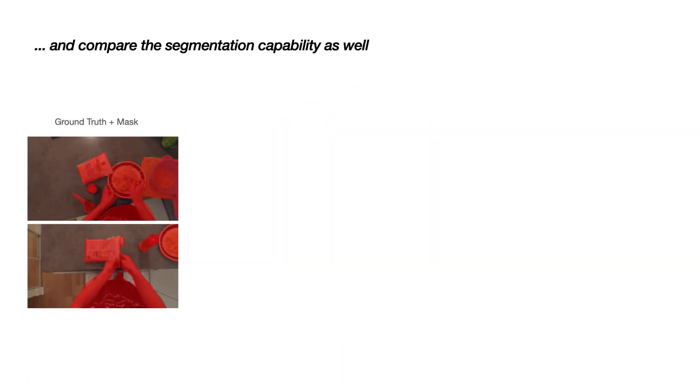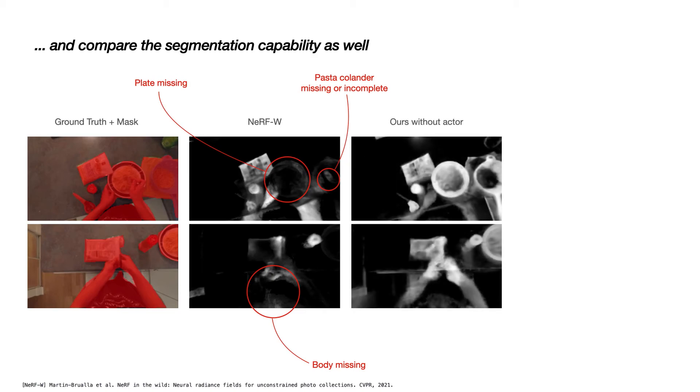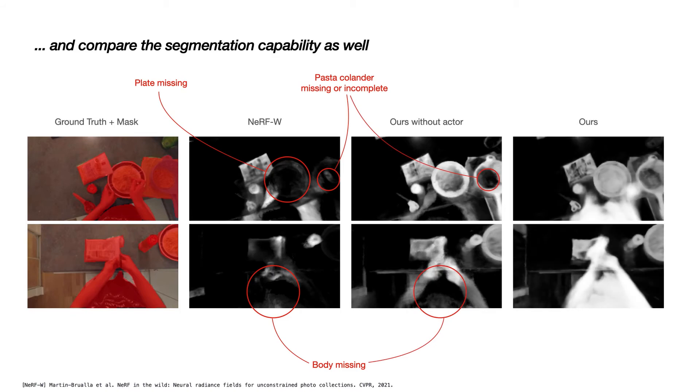Now we also compare our method to NeRF-W in terms of the segmentation performance. Here we see test views with ground truth annotations overlaid in red color. We note that NeRF-W fails to capture the plate and the actor completely. It also captures finer details, such as the scissors or the package less reliably. If we employ our method without the actor, we notice that the entire lower body is missing, whereas the hands are segmented with low confidence. If we include the actor model, we see the full body is captured correctly with high confidence and furthermore, the model also captures the middle part of the colander which is submitted by the other models.